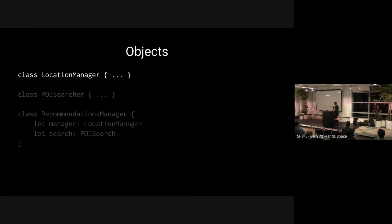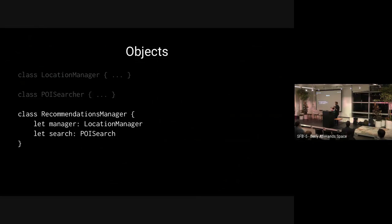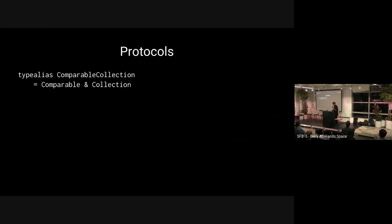A non-function example is class composition. Say you had a class encapsulating getting a person's current location and another encapsulating searching for points of interest. You want a class that gets a user's current position and uses it to get recommendations. If all we knew was inheritance, we'd be tempted to take the location manager and inherit down to a POI searcher and then to recommendations. Object composition says: just encapsulate both classes into a new class and expose an API that makes sense for a recommendations manager.